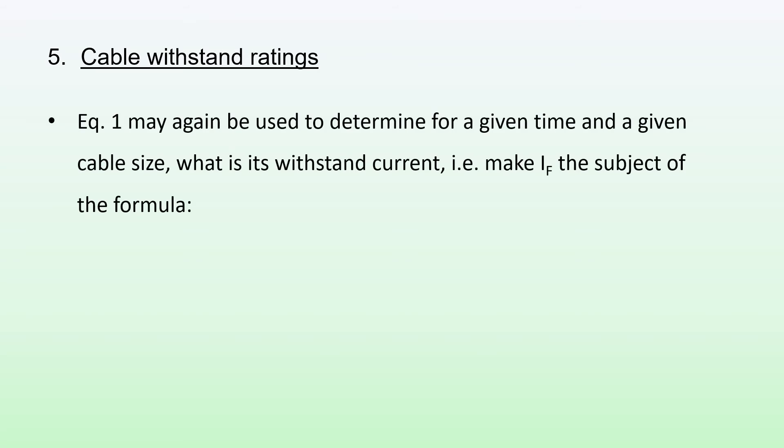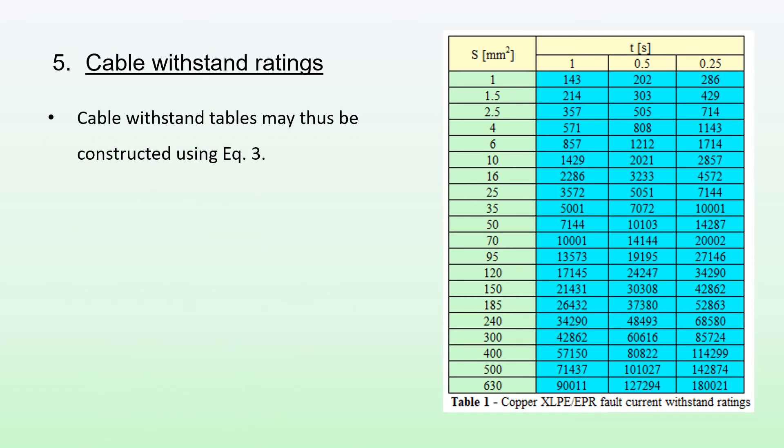Now let's look at cable withstand ratings. Equation 1 may again be used to determine for a given time and given cable size what is its withstand current. We make the fault current the subject of the formula, so we have equation 3. We can construct the withstand table by using this equation 3. For various different times, here I've used 1, 0.5, and 0.25 seconds, and for all the various cable sizes I've determined what are the withstand currents for these various cable sizes for a given time.